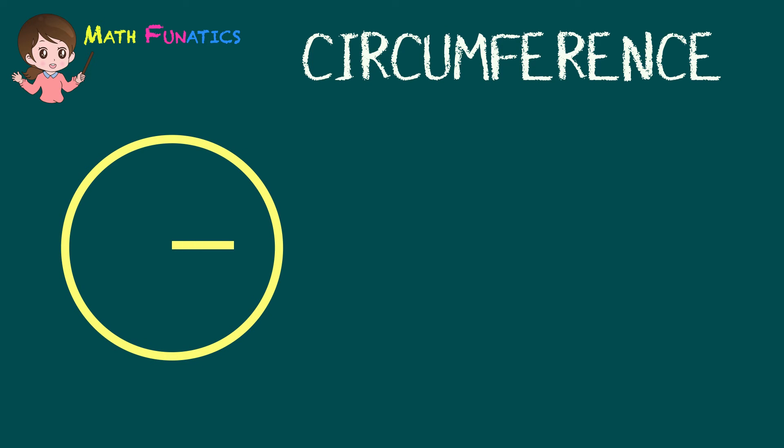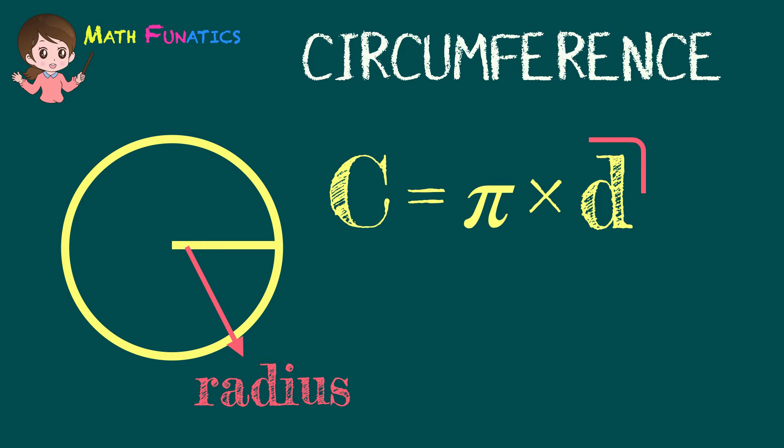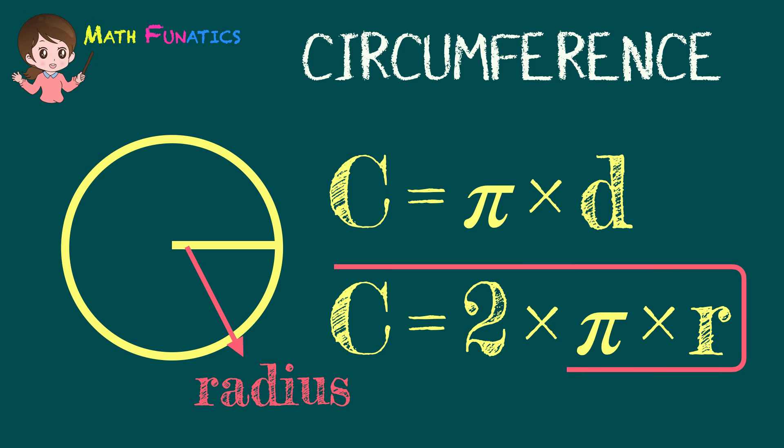How about if the given dimension of a circle is its radius instead of its diameter? Again, in our previous examples we used C equals pi times D. Remember that the diameter of a circle is twice its radius, so we may write it as 2 times R. We then rewrite the formula as C equals 2 times pi times R.